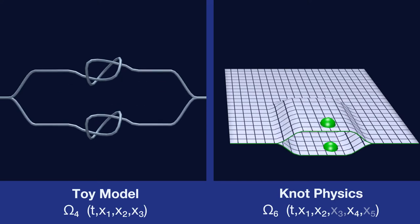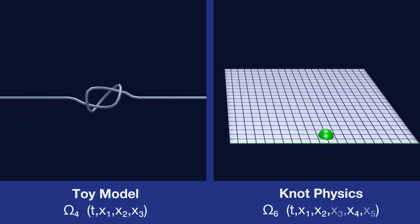In knot physics, we assume that the spacetime manifold is a branched manifold, and in a previous video, we showed how those branches can separate and recombine.